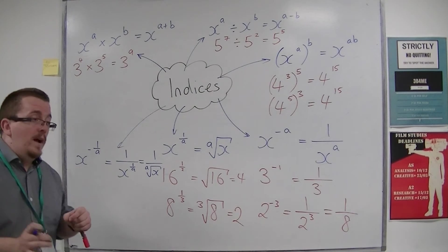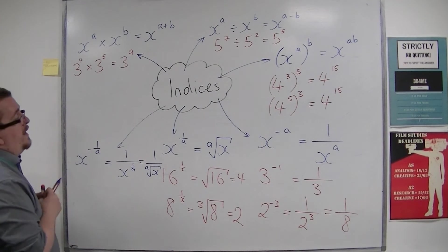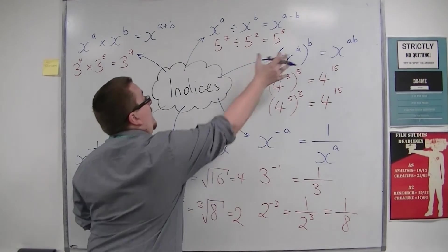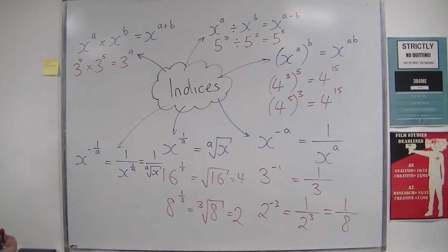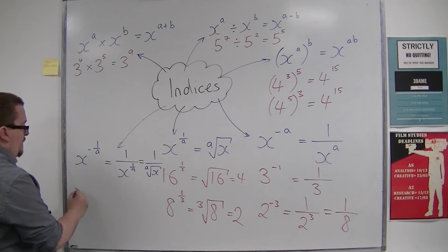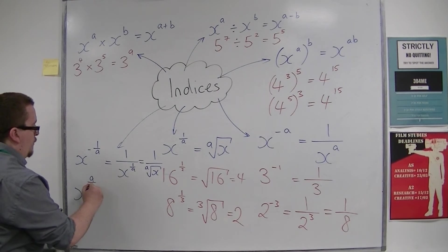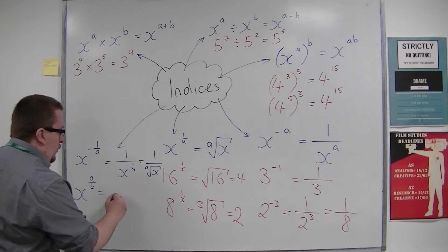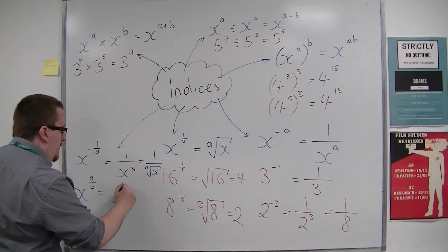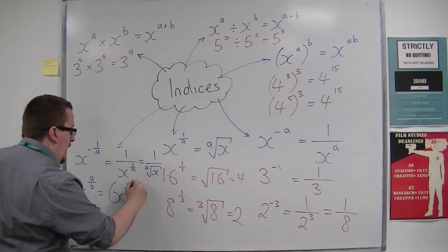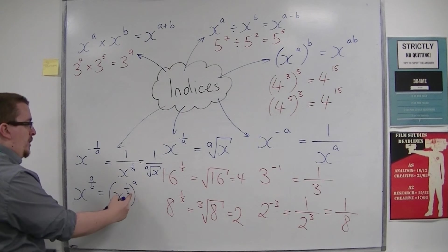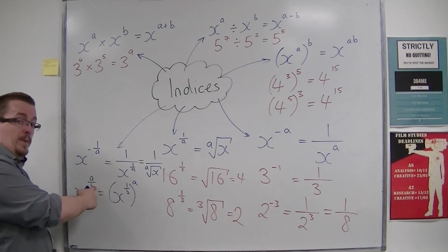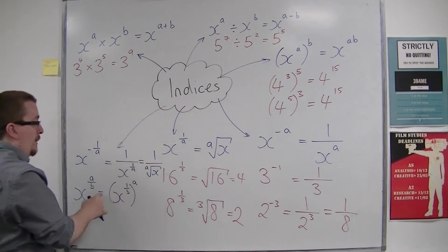In a similar way, you could incorporate fractional indices and that third rule. You could have x to the power of a over b. That is equal to x to the power of 1 over b all to the power of a, because a times 1 over b is a over b. That's using that third law.